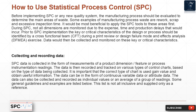Collecting and recording data: SPC data is collected in the form of measurements of a product dimension or feature, or process instrumentation readings. The data is then recorded and tracked on various types of control charts based on the type of data being collected. It is important that the correct chart type is used to gain value and obtain useful information. Data can be in the form of continuous variable data or attribute data, and can be collected as individual values or as an average of a group of readings.